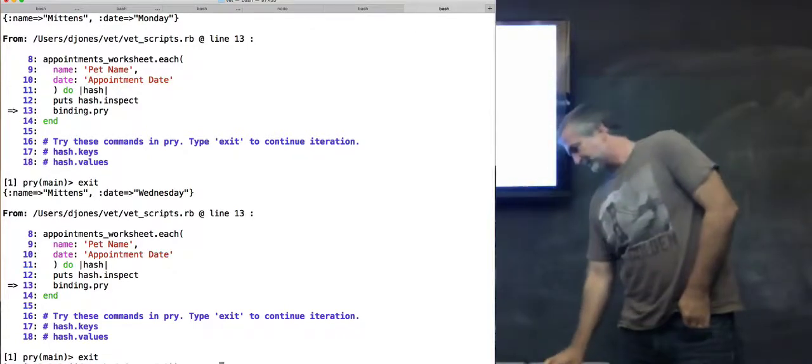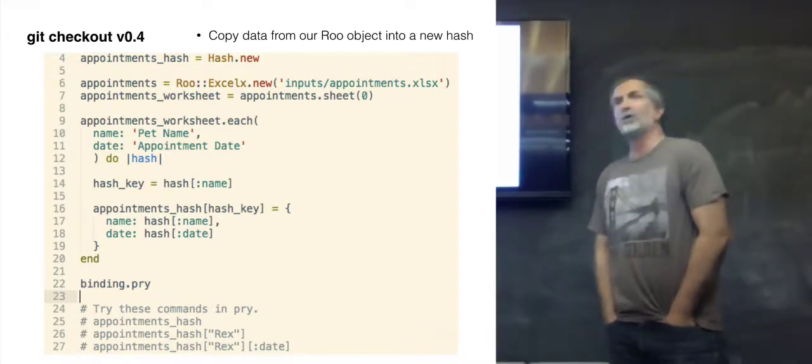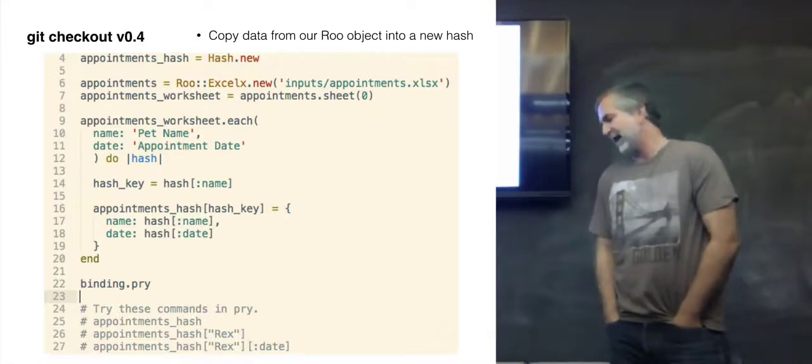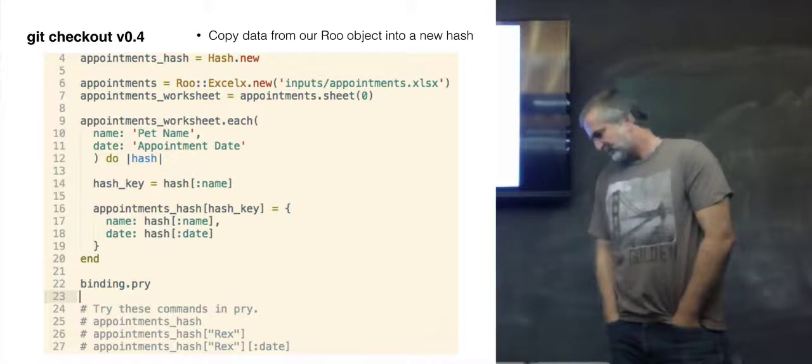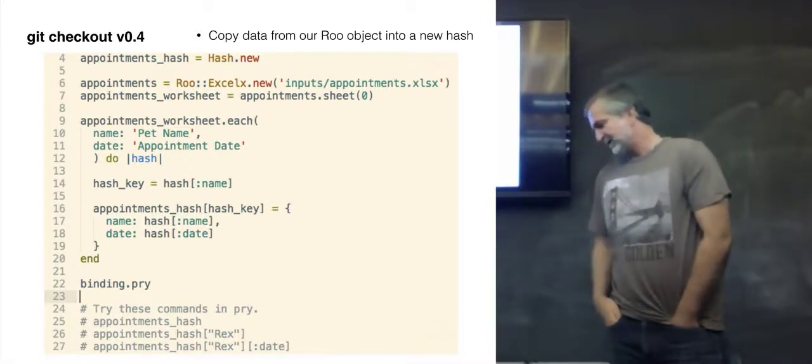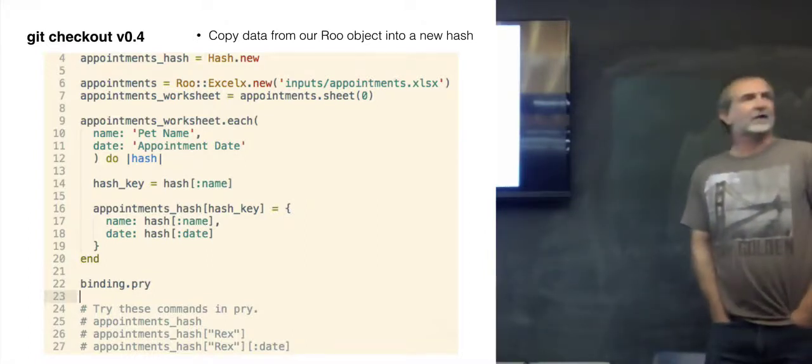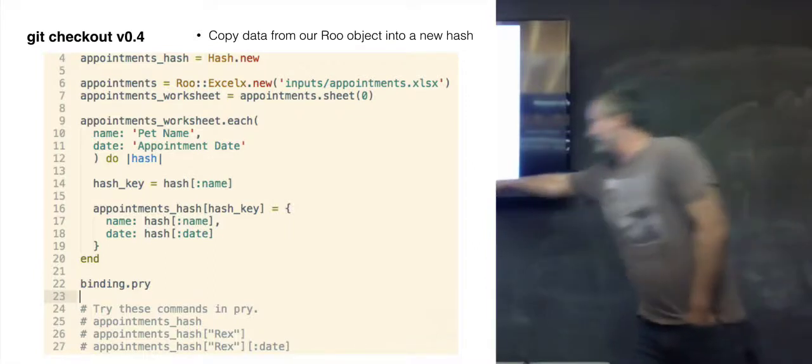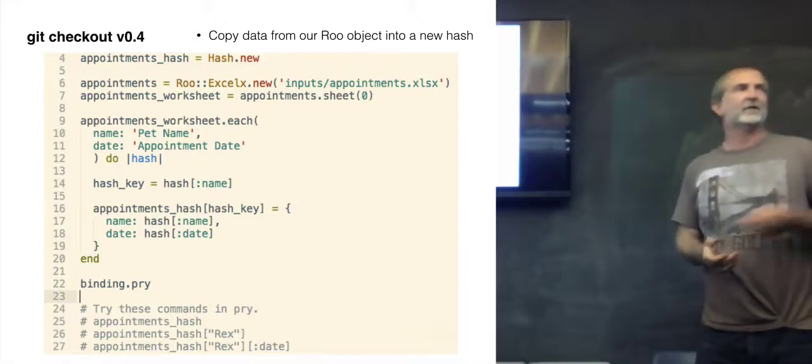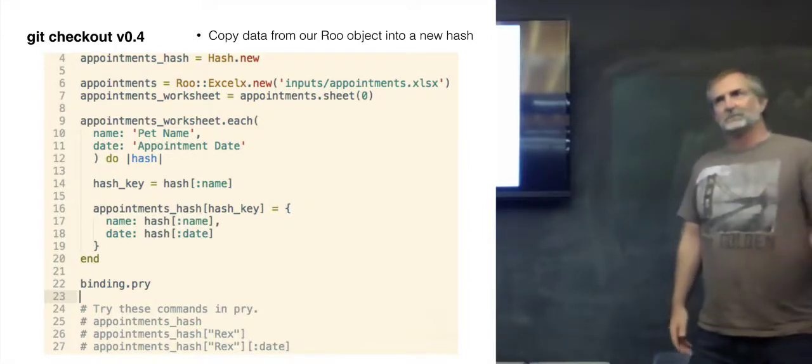So what we're going to do now is copy the data from this Roo hash into a more vanilla hash. You'll see on row four we've created just a new hash, and then down in line 14 we've created a hash key. And then we're basically going to iterate through the Roo object and we're going to just start building a new hash. Now there's obviously an error in here. The reason I built this is because I wanted to say things like appointment_hash[pet_name][date]. The problem is pets go to the vet more than once ever.